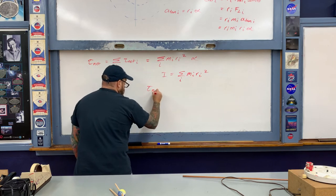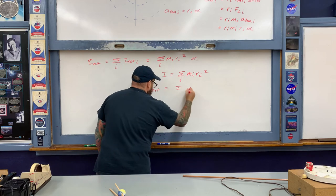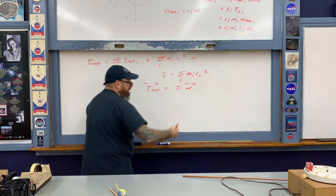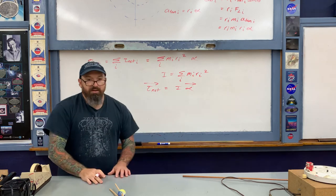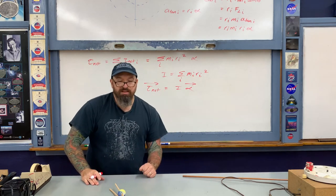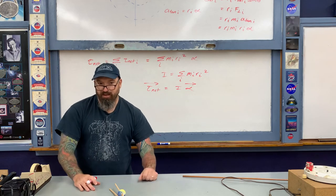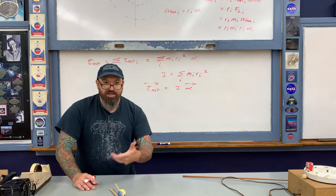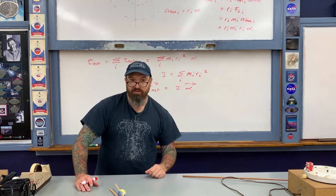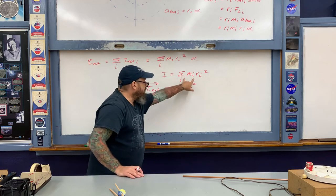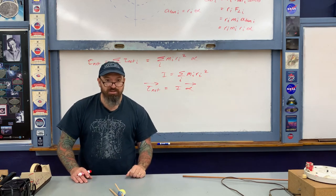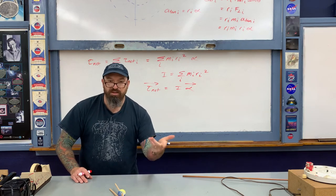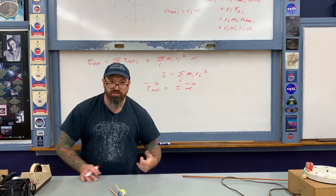This gives us once again: net torque equals I times alpha, and the direction of the net torque vector equals the direction of the angular acceleration vector alpha. It is the same series of steps as before for a point particle, now summed over all particles. For an actual continuous distribution of matter — like a turntable — the summation becomes an integral used to describe the rotational inertia.